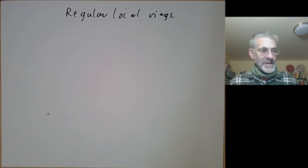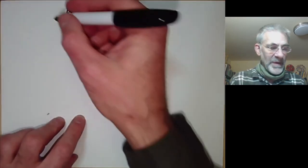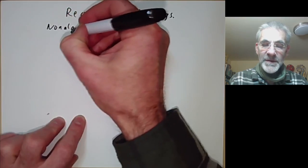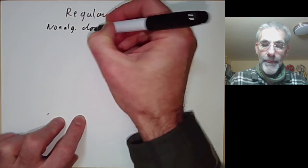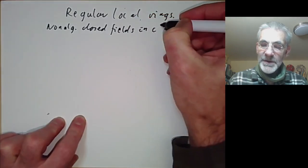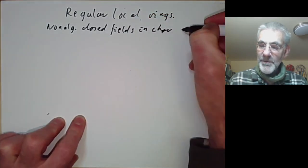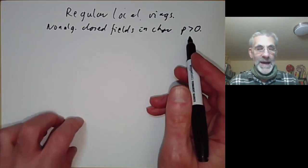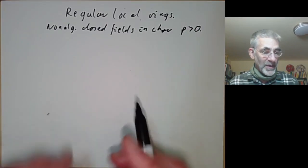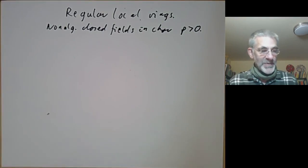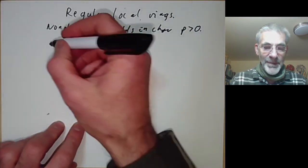The problem is if you start looking at non-algebraically closed fields in characteristic p greater than zero, then some rather odd things can happen with regular local rings, and the first couple of examples will be to illustrate what might happen.